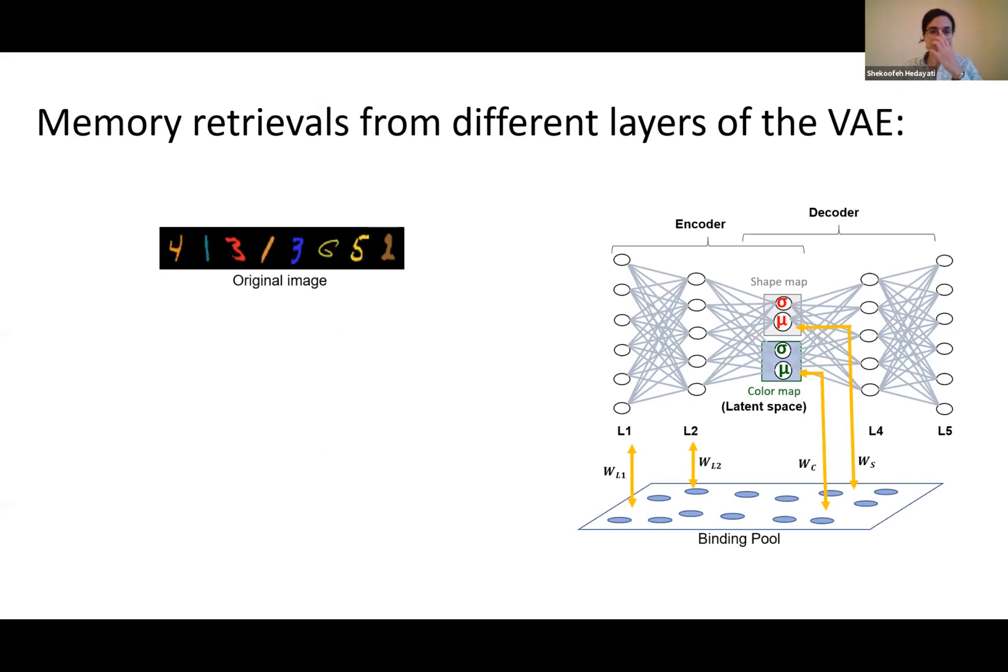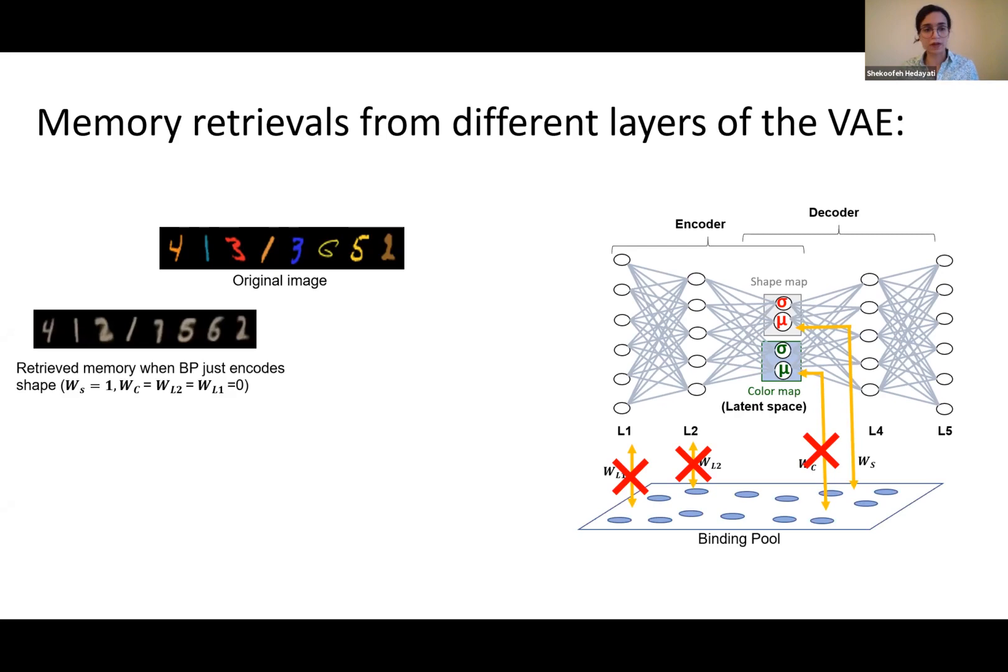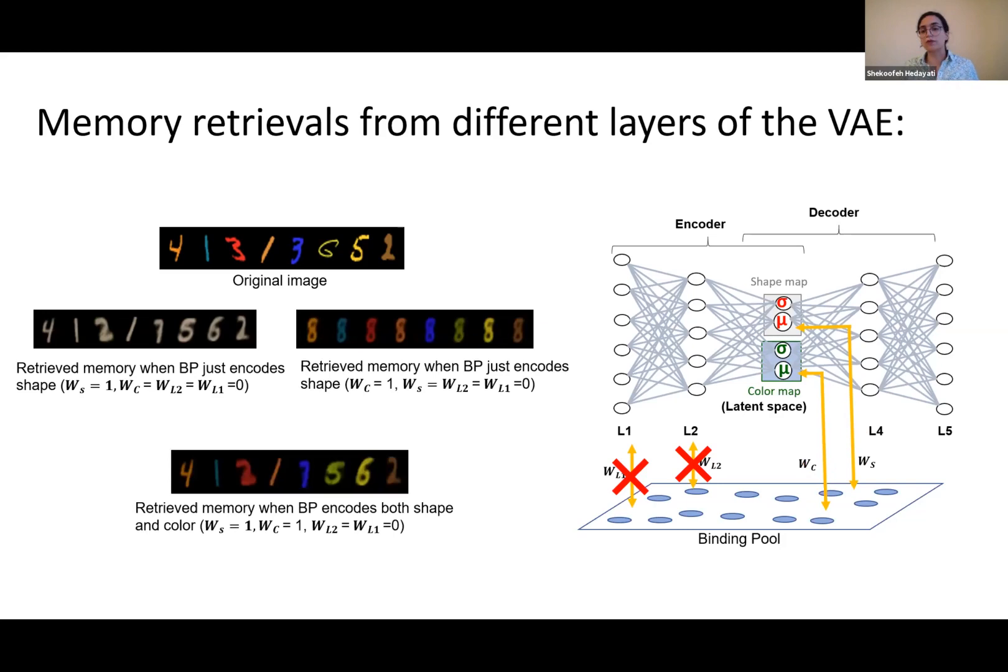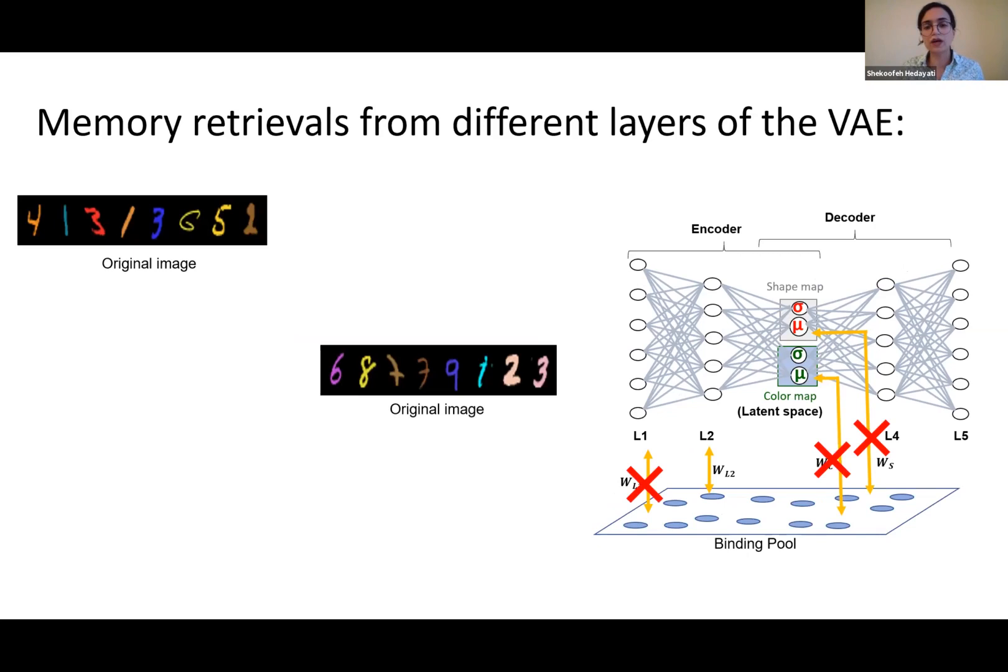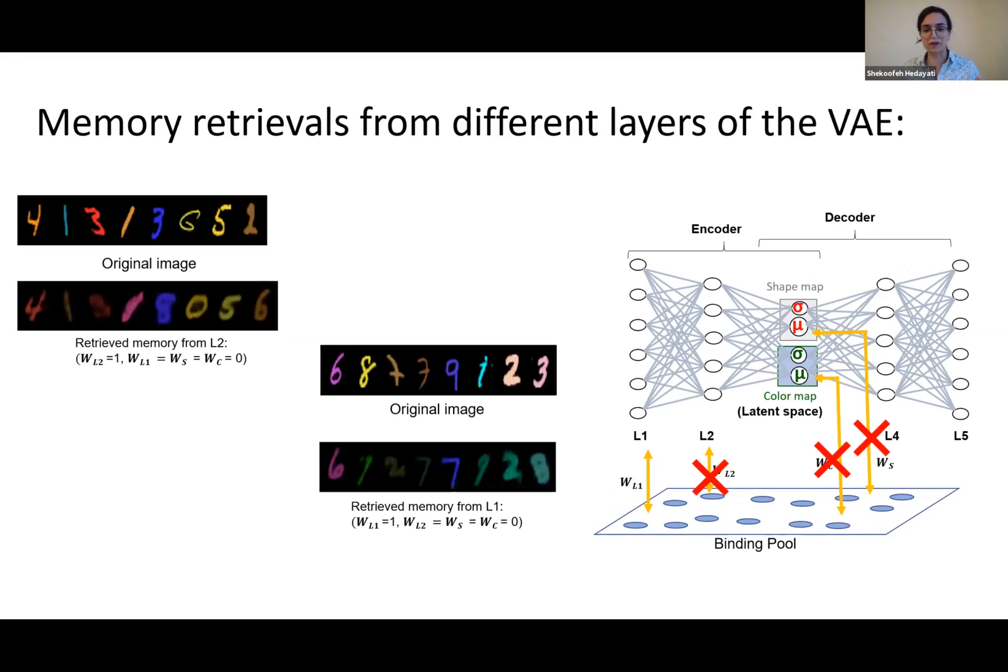How do the memory retrievals look? These were just reconstructions. Imagine that I have only WS active, meaning I project only shape map activations to the binding pool, encode shape activations to the binding pool, and reconstruct them. This is how the reconstruction looks like: the memory retrieval from shape map. This is the memory retrieval from color map. This is the memory retrieval from both maps at the same time. Also layer one and layer two: for L2, this is the memory retrieval from L2, and this is from L1. They do not have good resolution as the latent space.